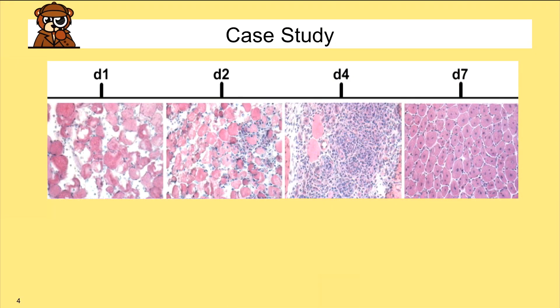First, a reminder of the time course of muscle repair following cardiotoxin or notexin injury. This is a seven-day time course shown as cross-sections stained by hematoxylin and eosin. At day one muscle looks pretty blown out; by day two you start to see mononucleated cells staining purple; by day four the cross-section is filled with hematoxylin-positive cells, which could be immune cells or proliferating satellite cells.